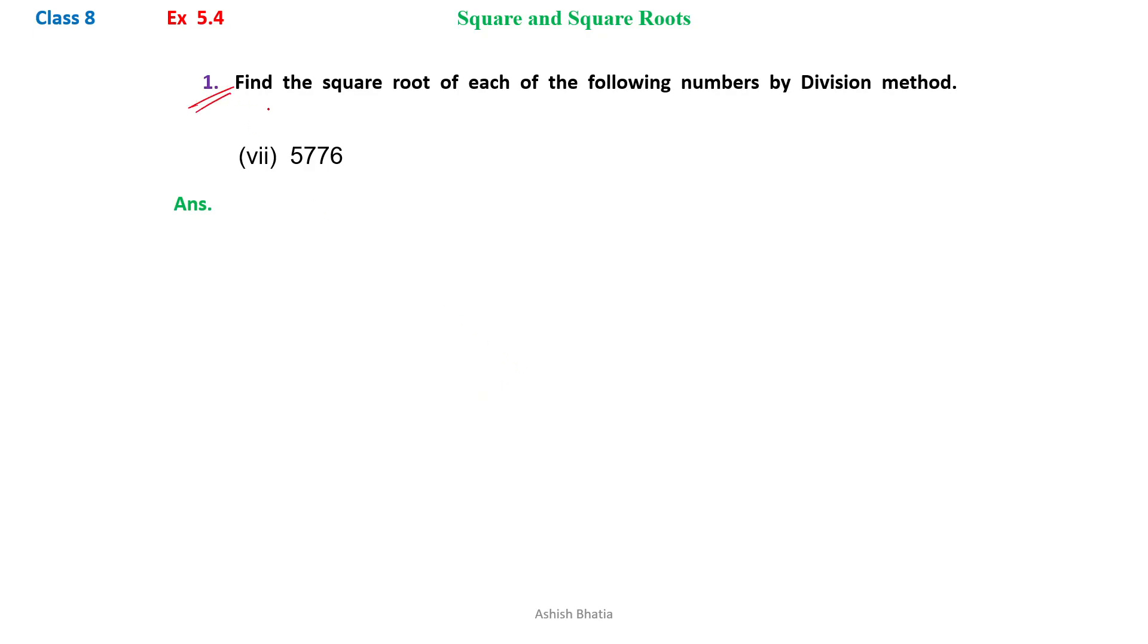Exercise 5.4, question number 1: Find the square root of each of the following by division method. Here we have to find out the square root of 5776. We will perform the division method here.